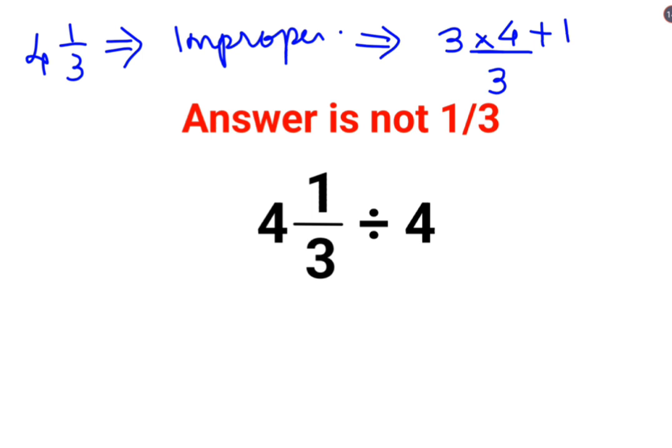So 3 multiplied by 4 is 12, plus 1, that is 13. So we have 13/3 divided by 4.